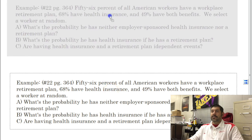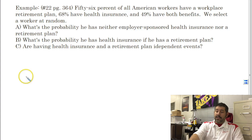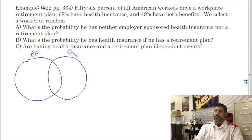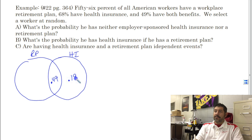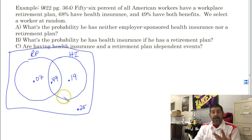Alright, so let's take a look at this example — this is number 22 from the BVD book. I'm going to make a Venn diagram with retirement plan and health insurance. They have both at 49%, health insurance only is 19%, retirement plan only is 7%, and the outside — neither — is 25%, because these all add up and we subtract from 100.